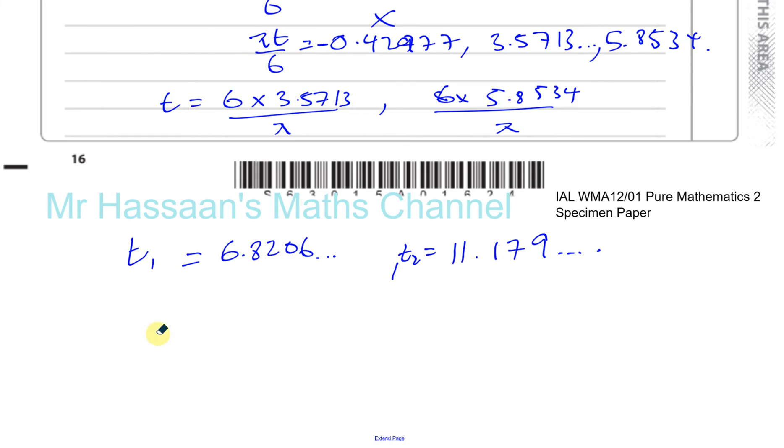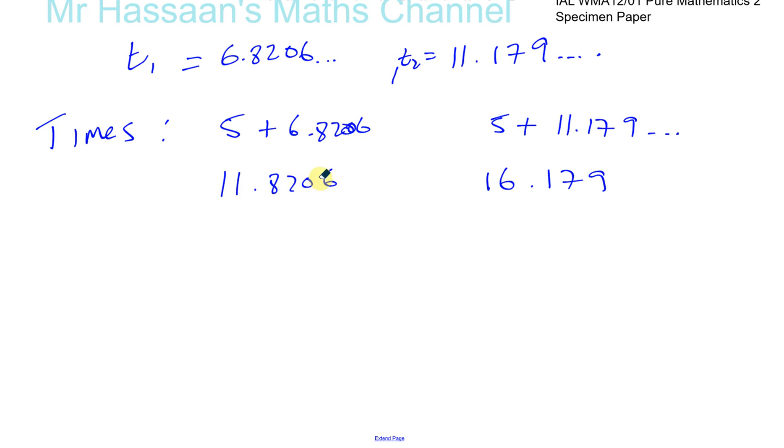So what we've got to do is, to find the times of the day, the times, we have to add 5 a.m. Because this is the number of hours after 5 a.m. So the times are going to be 5 plus 6.8206 and 5 plus 11.179. So this is going to give me 11.8206, and this is going to give me 16.179.